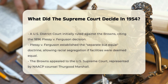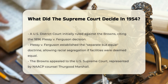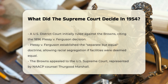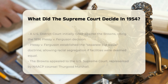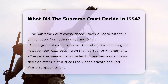The Supreme Court consolidated Brown v. Board of Education with four other similar cases from different states and the District of Columbia. The Court heard arguments in December 1952 and re-argued the case in December 1953 to address specific questions about the 14th Amendment and its implications on racial segregation in public education. The justices were initially divided, but after the death of Chief Justice Fred Vinson and the appointment of Earl Warren, the court moved towards a unanimous decision.